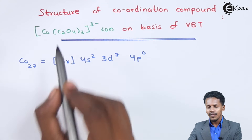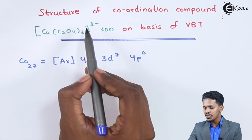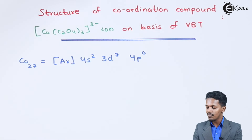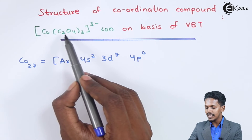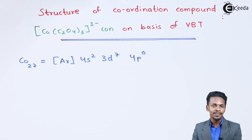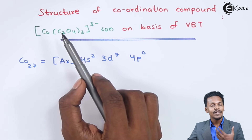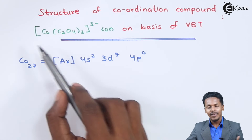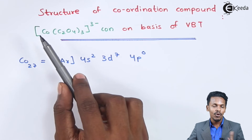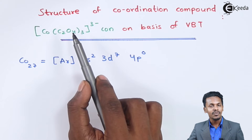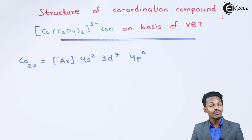Here we could find the oxidation number of this cobalt. It has been found that C₂O₄, that is the oxalato ion, has an oxidation state of 2 minus. So if we calculate the oxidation number of cobalt, we get it as 3 plus.